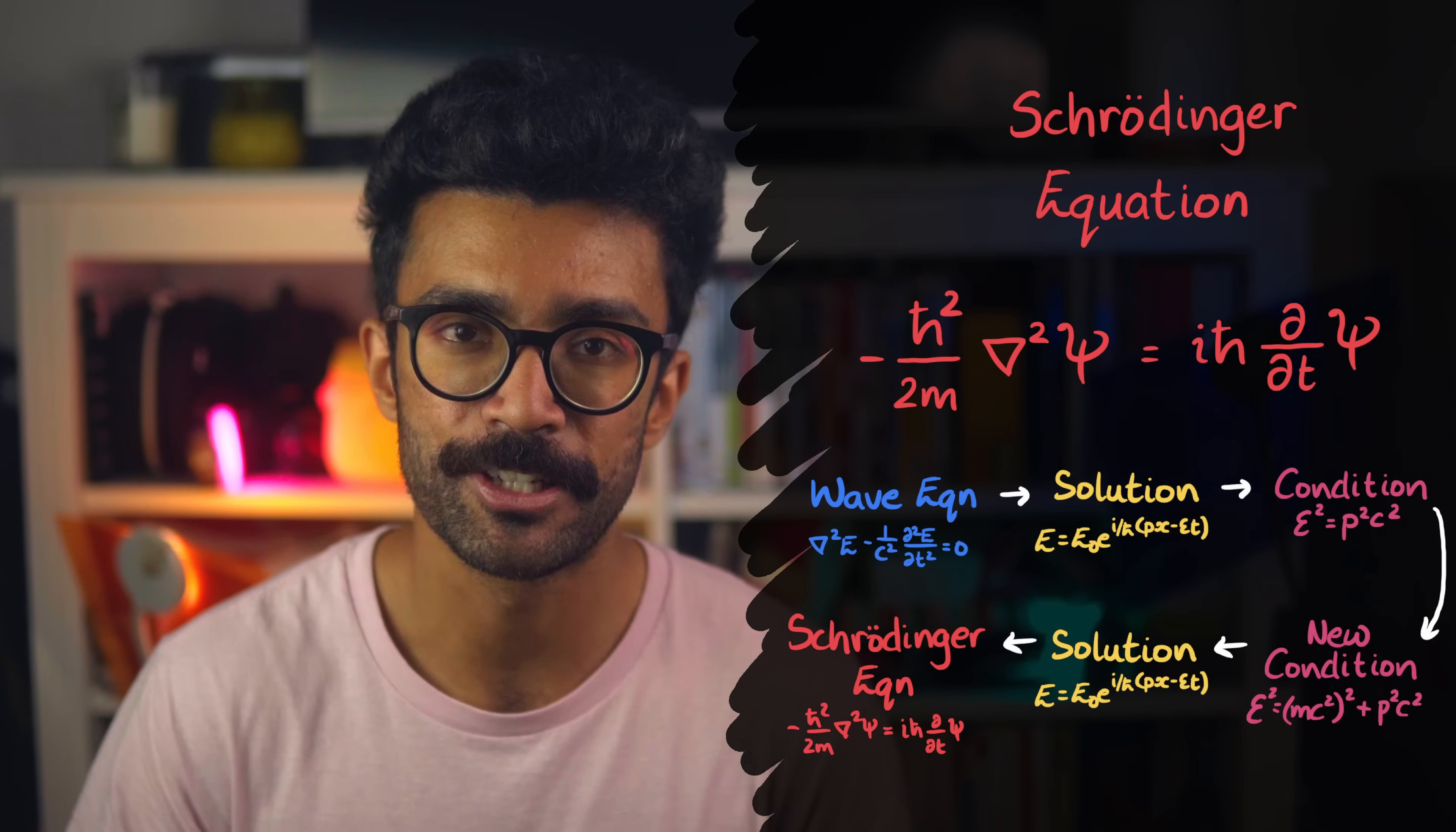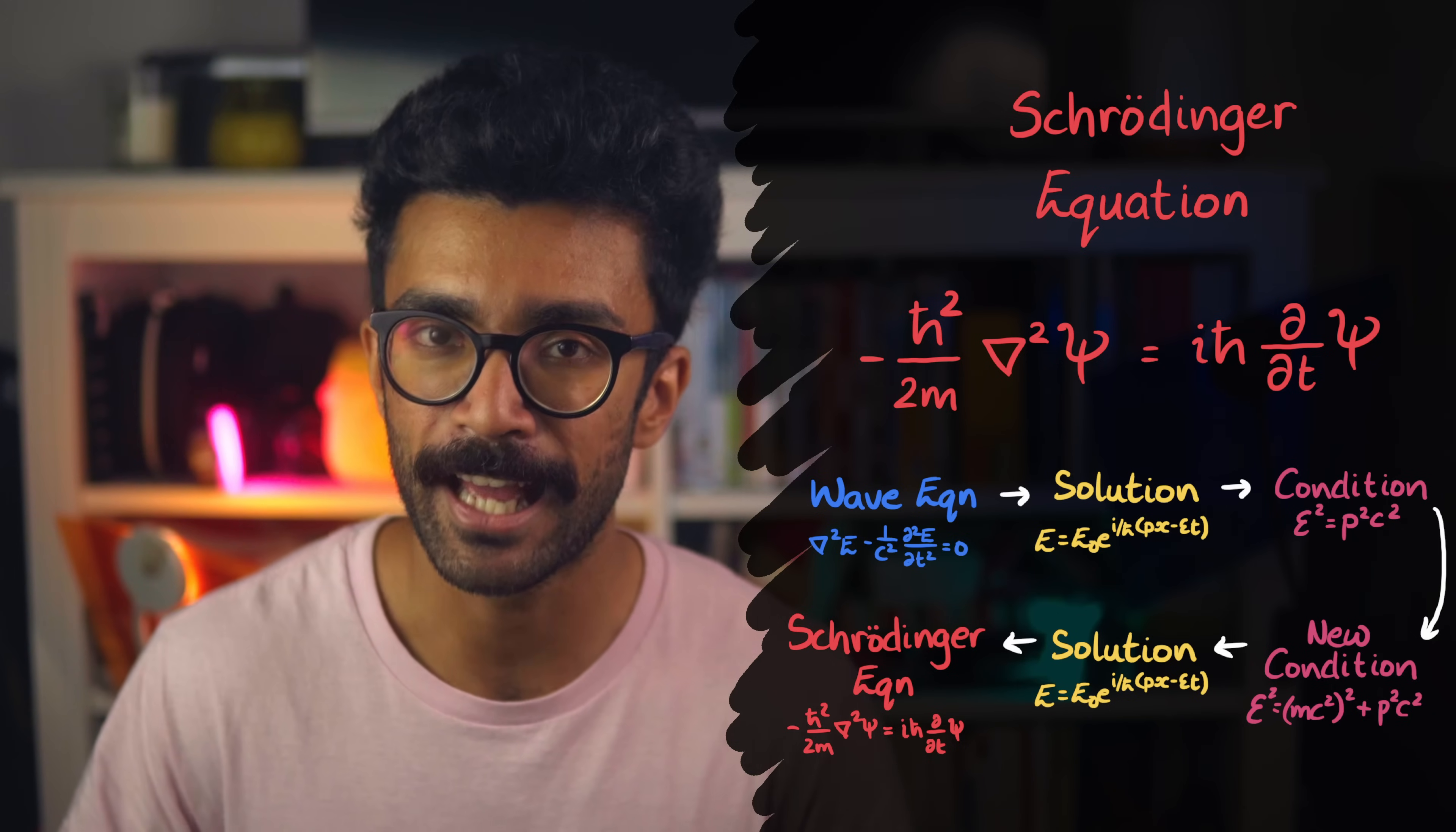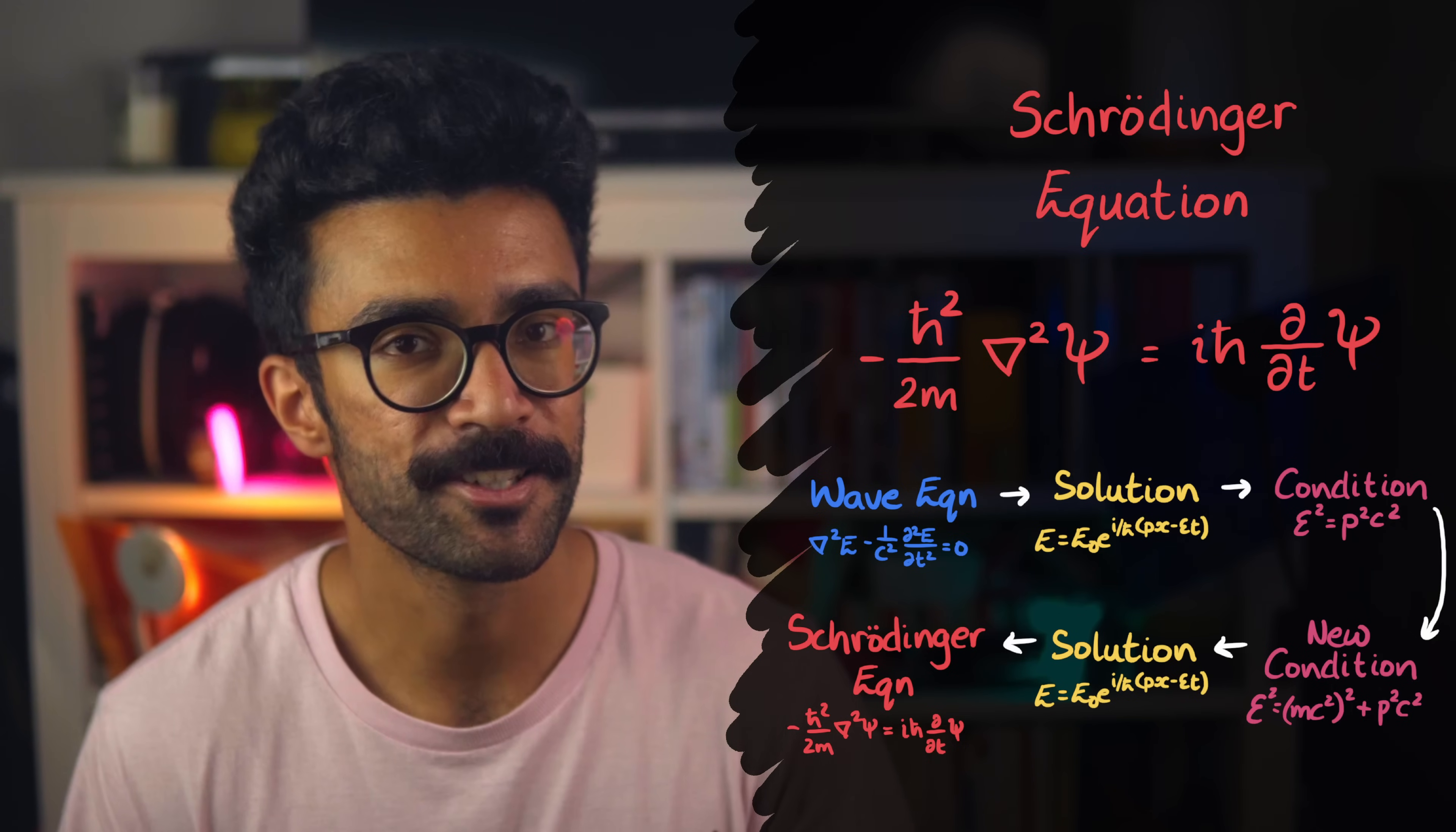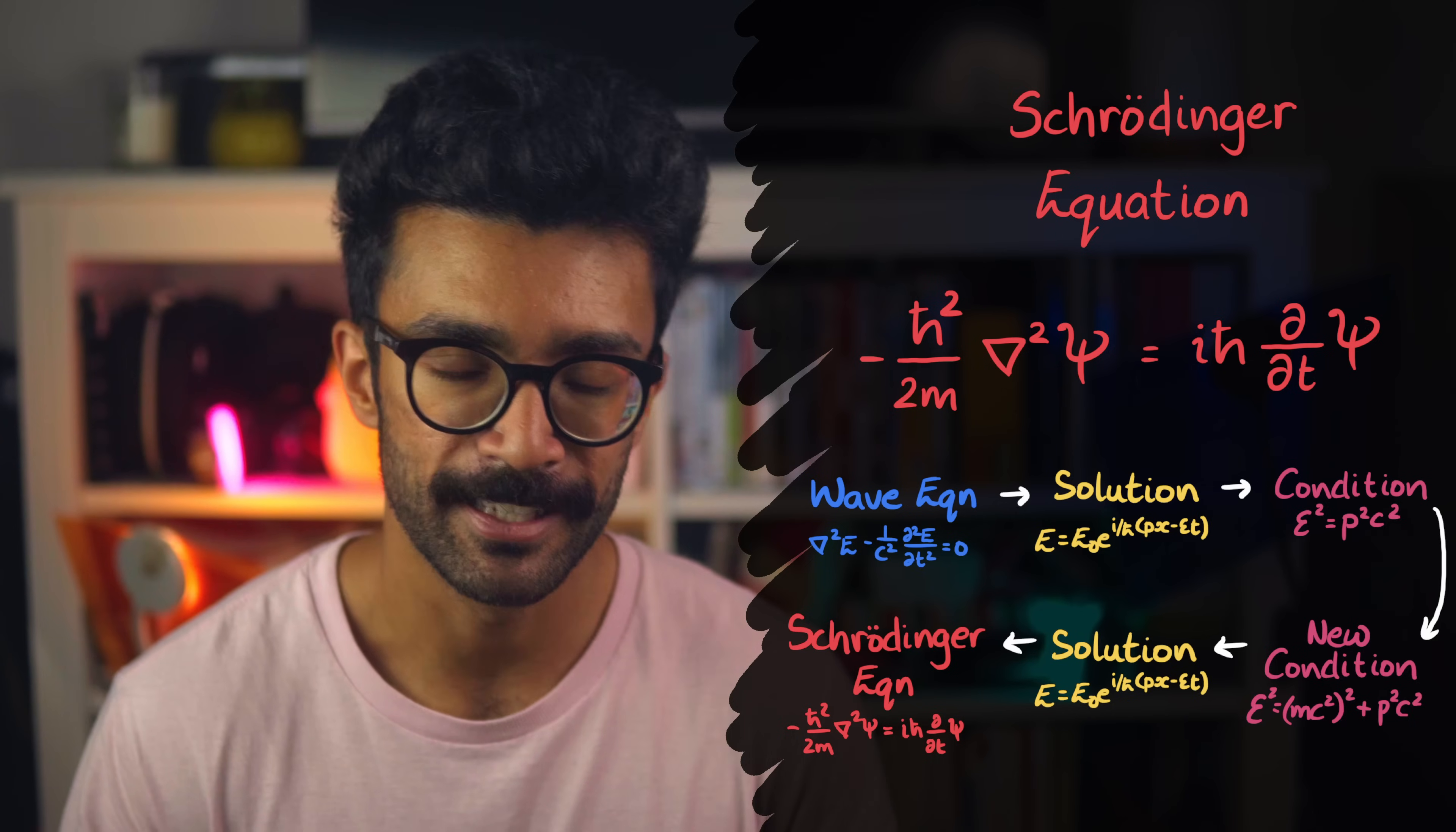And this shows us that the Schrödinger equation need not have come out of thin air. Of course, experimentally, the Schrödinger equation is well-tested and verified. Its predictions very closely match what we expect to see happening in real life. But even theoretically, there are a few ways to get the Schrödinger equation, and we've seen one of them today that I found particularly interesting.